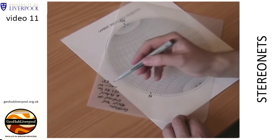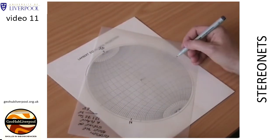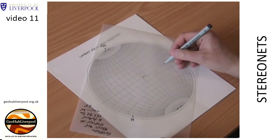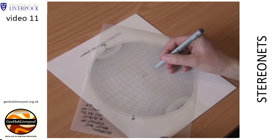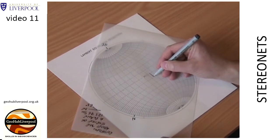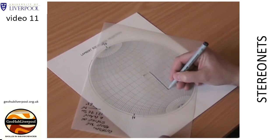Count 76 degrees along the equator from the primitive circle towards the center of the stereo net. Remember the 10 degree divisions and 2 degree subdivisions. Mark the point where the dip is 76 degrees to the southwest.